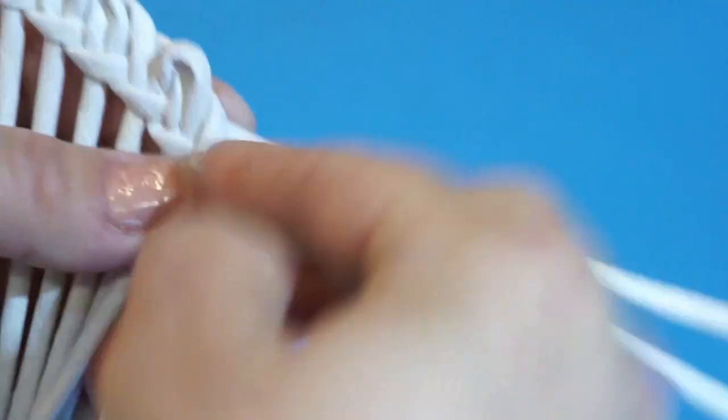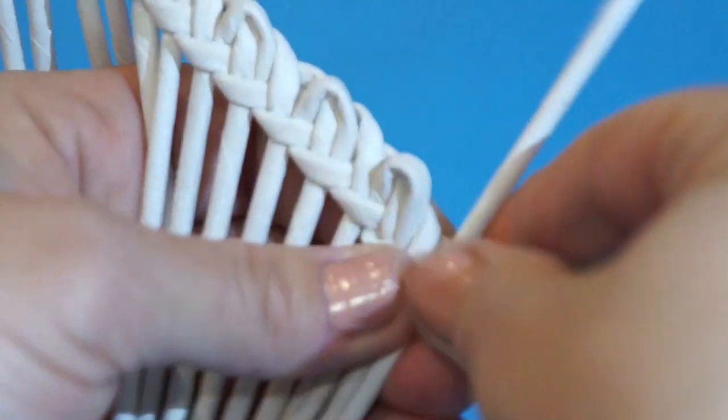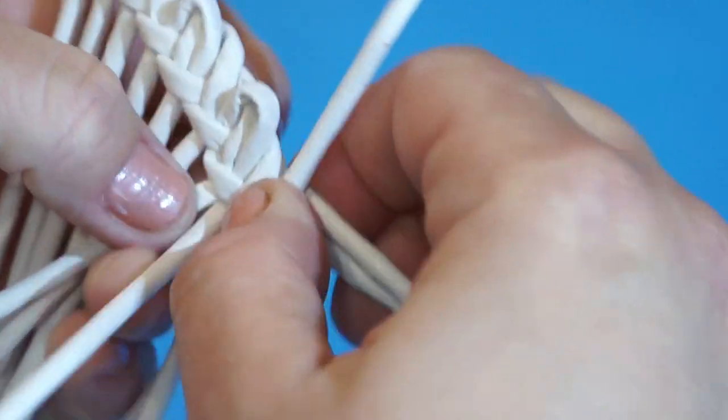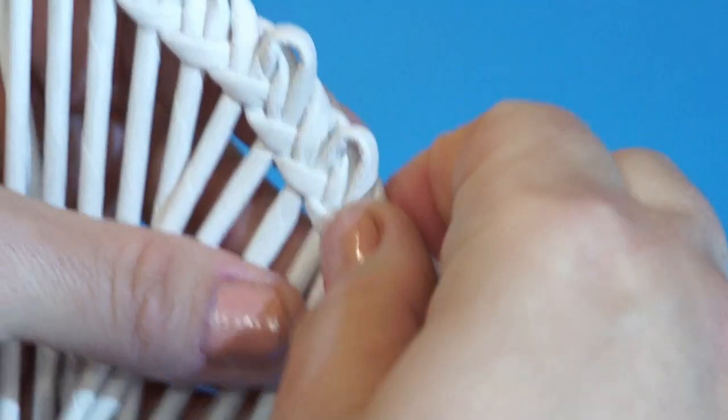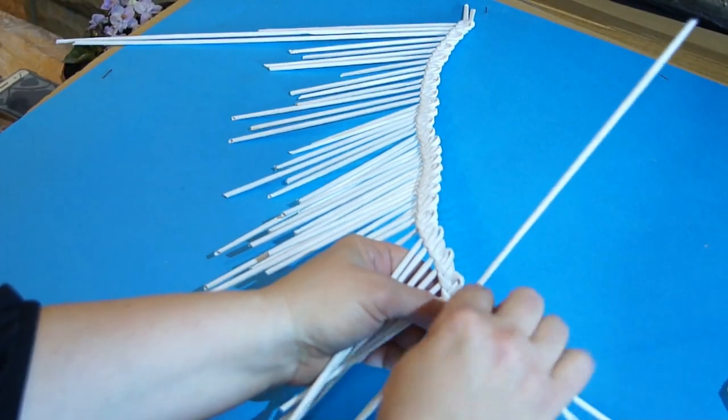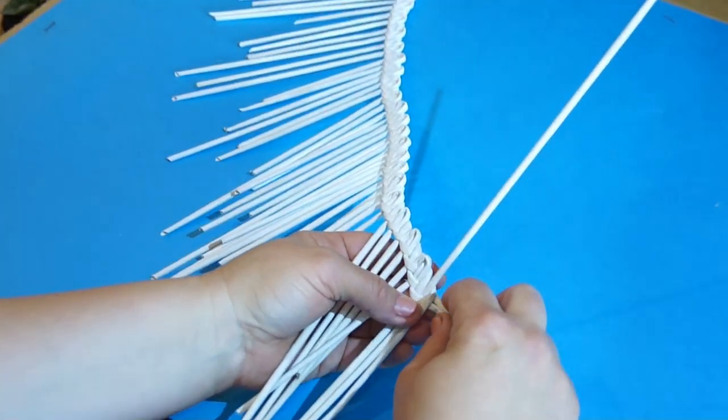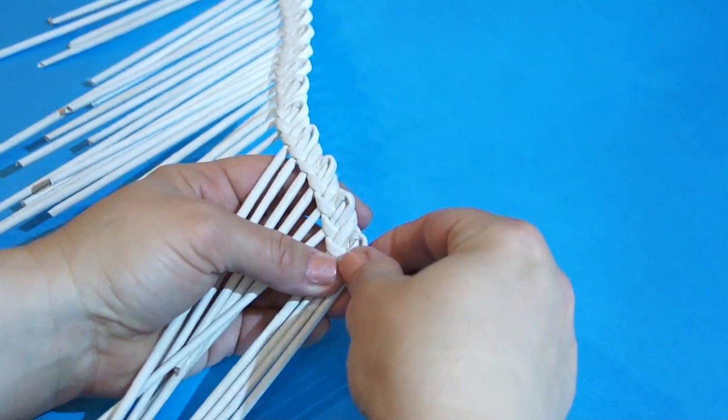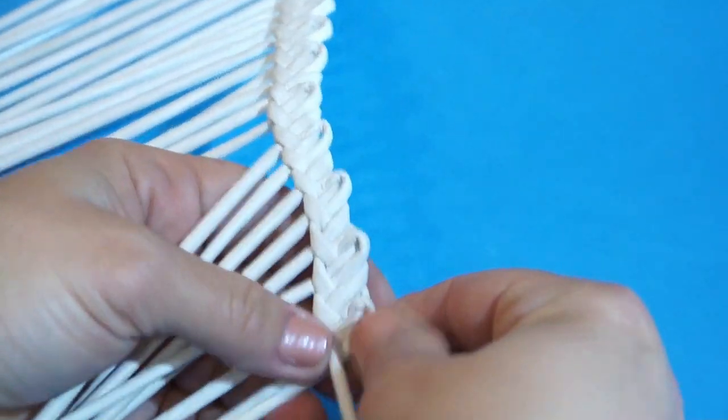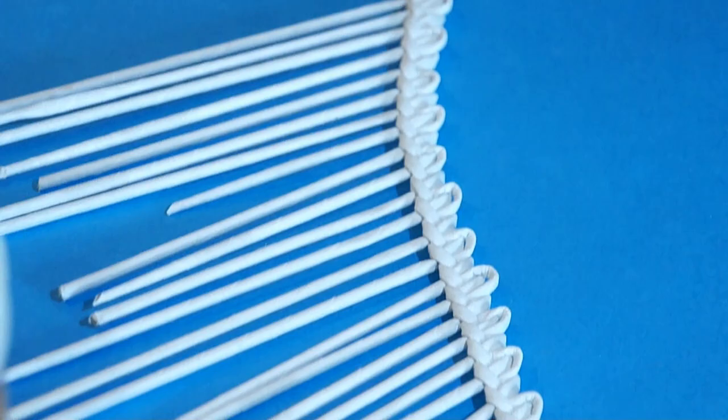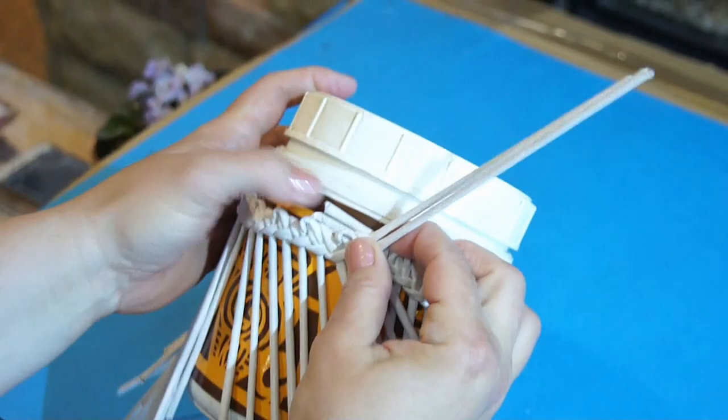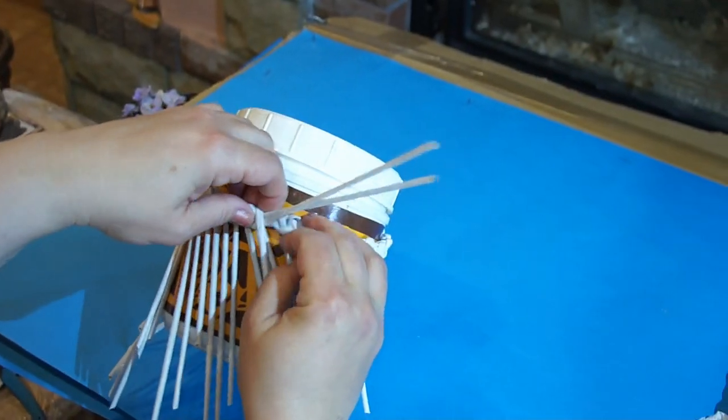One, two. I join the next one. Braid. I am already reaching the required length. I have got a braid like this. Hug the base with the braid you have got. Try it on. It fits perfectly.